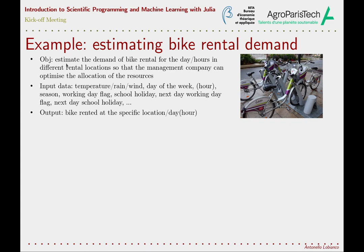So we want to be able to estimate this demand at different places and at different days, and possibly hours, based on several parameters: the temperature, the raining and wind conditions of the day, the day of the week, the hour if we want an hourly estimation, the season, a working day flag, maybe a school holiday flag, maybe the same variable lagged — and have this for the various locations where bikes are available.